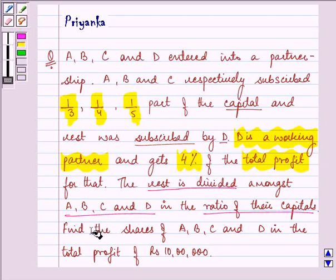Find the share of A, B, C and D in the total profit of Rs. 10 lakh.